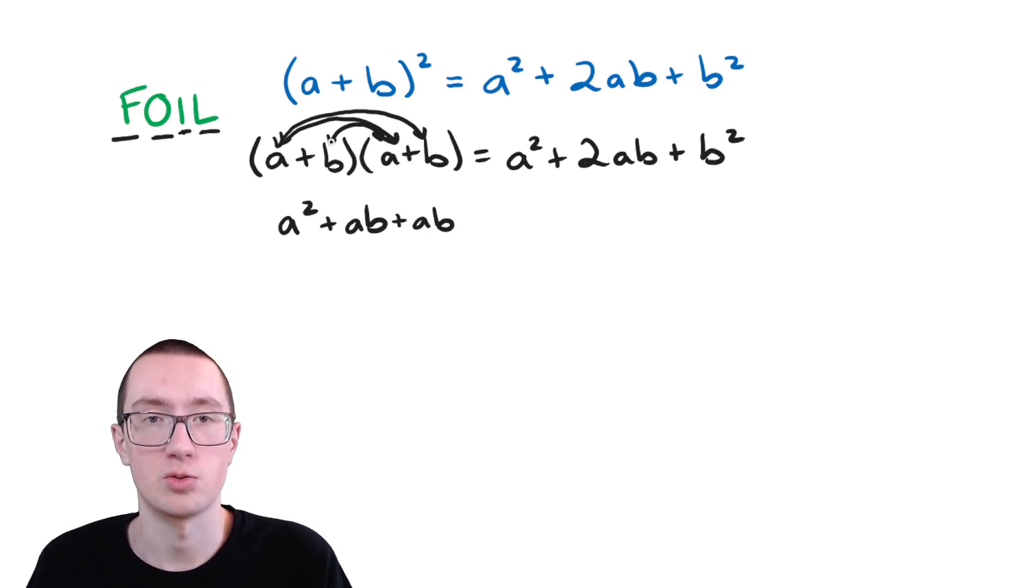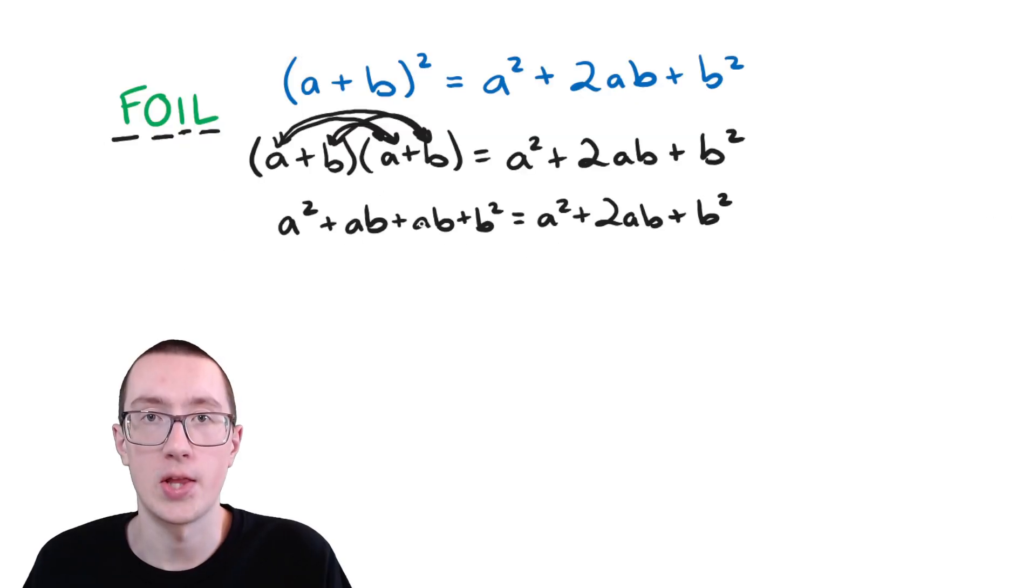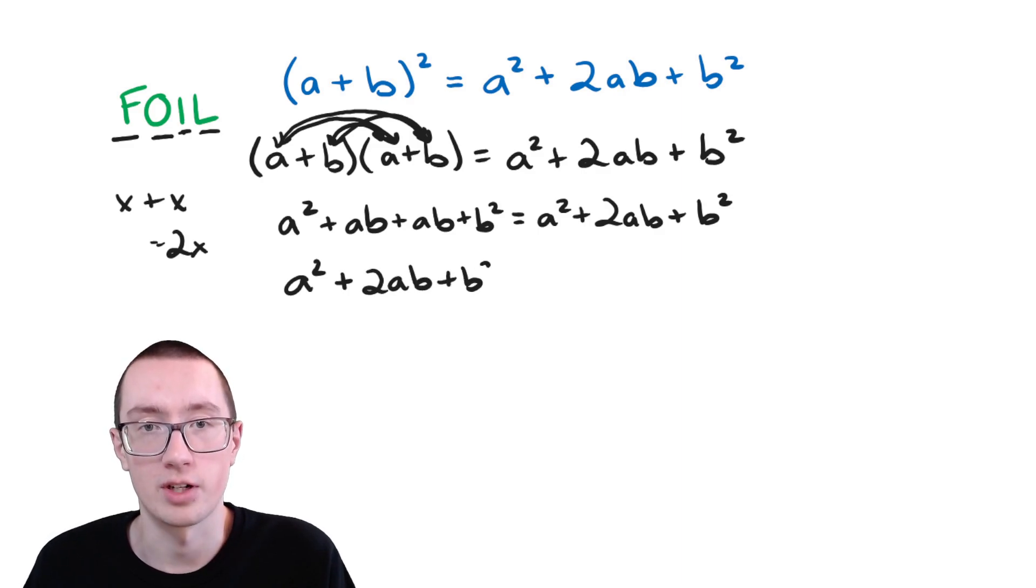And then l for last. So we multiply the last parts. In that case, that's the b and the b, which is b squared. And the other side stays the same. And now over here on this side, I'm noticing we have ab plus ab. We are adding like terms. We're adding two parts that have exactly the same letters. So this would be like the same thing if you had x plus x. x plus x is 2x. So we can do the same thing with this, even though we have two letters. So we're going to have a squared plus ab plus ab is now 2ab. And then b squared.